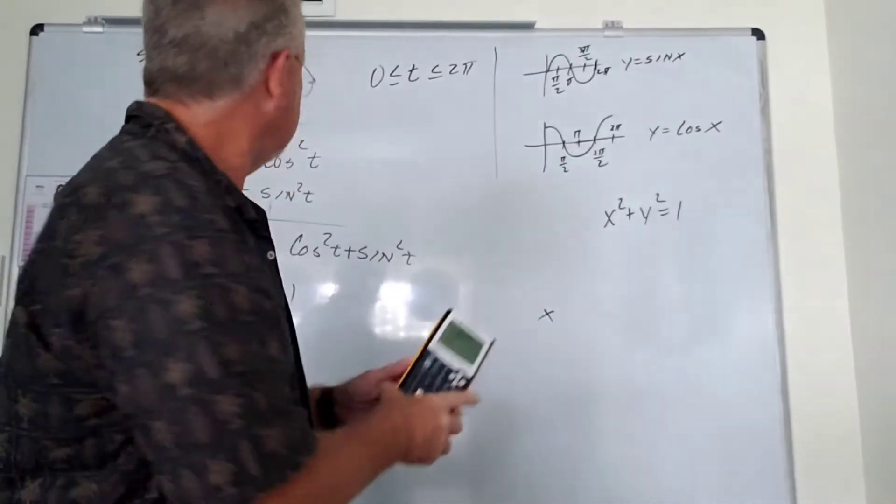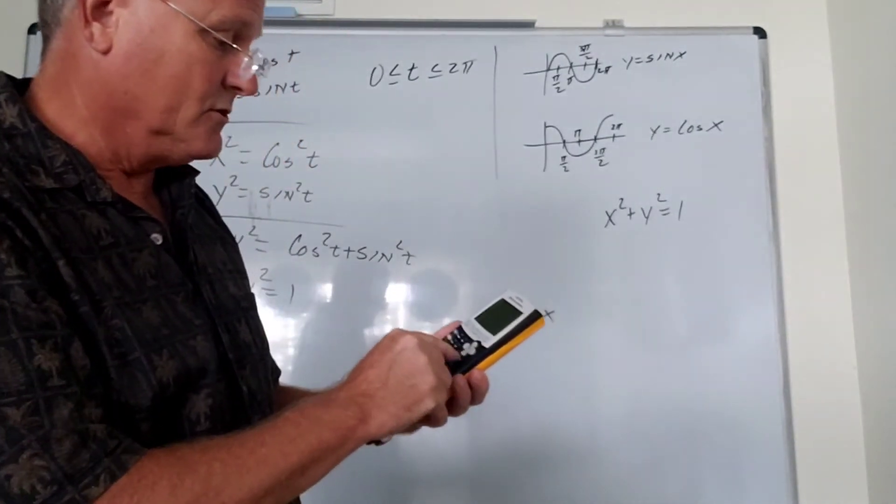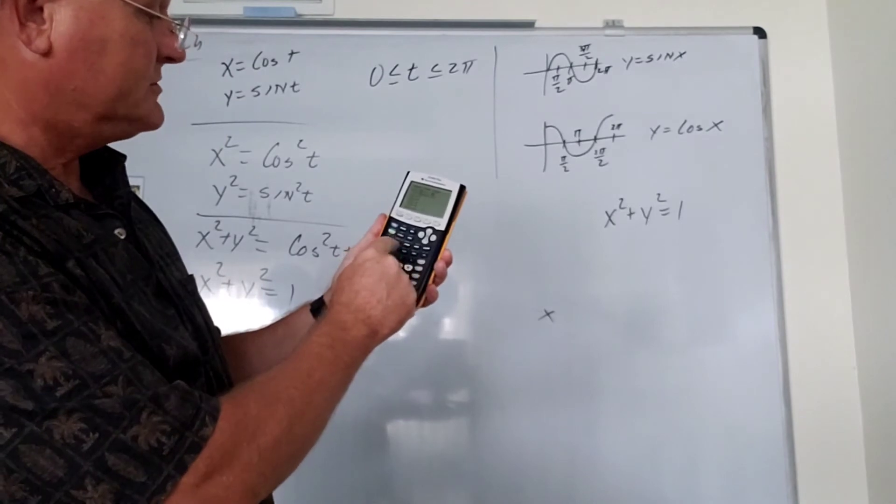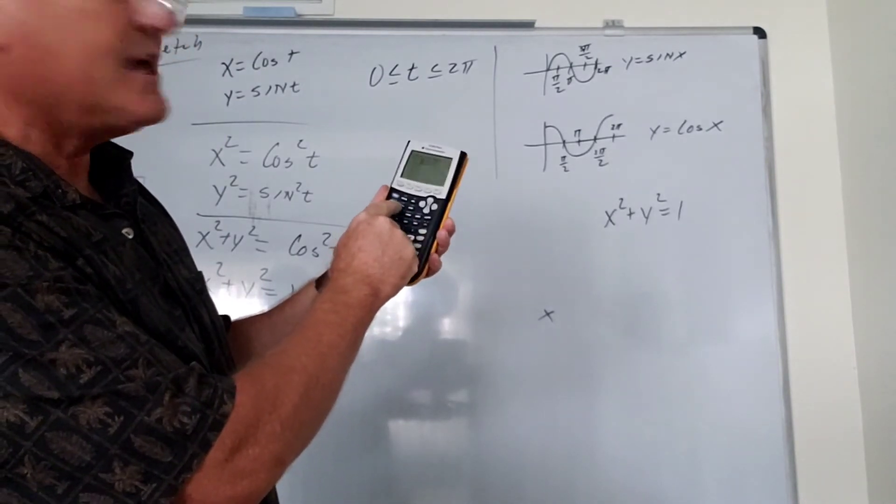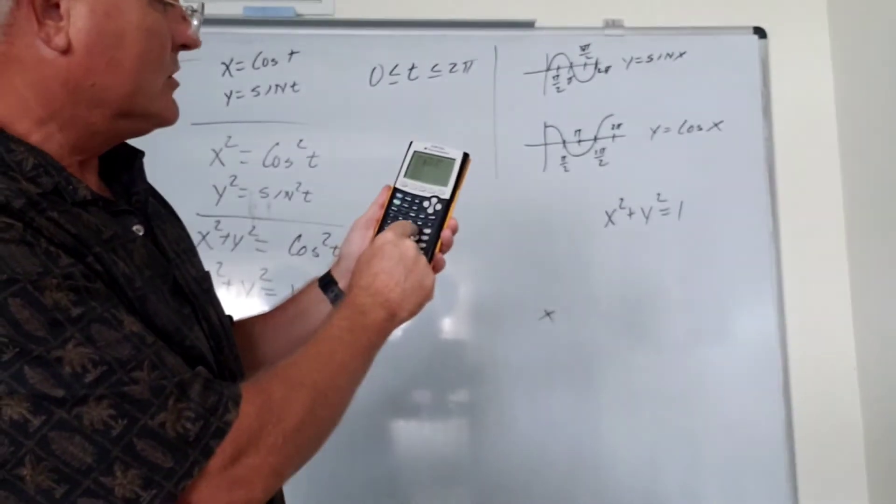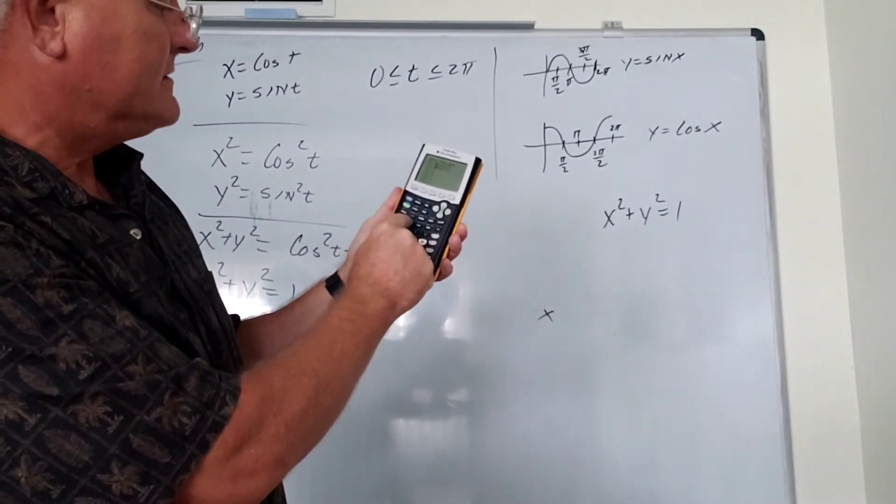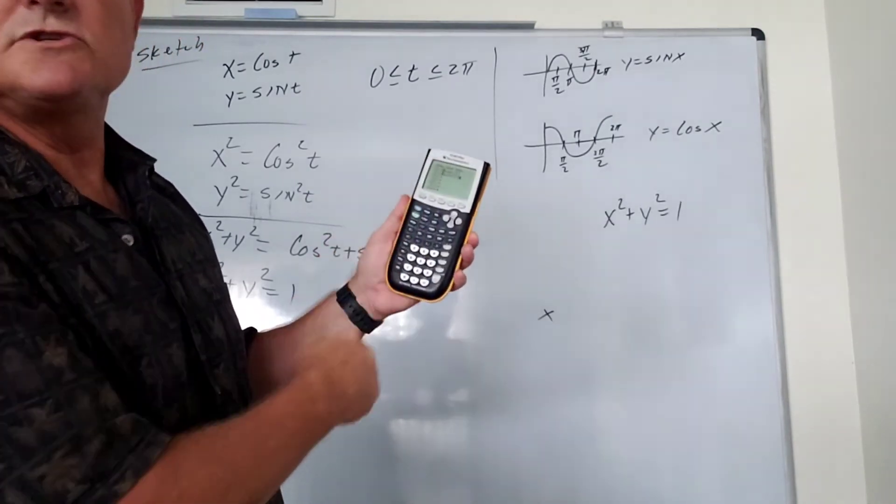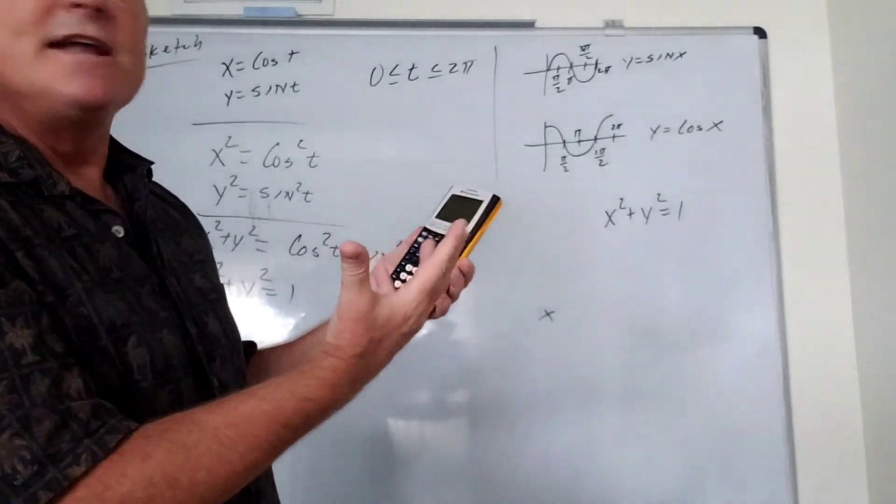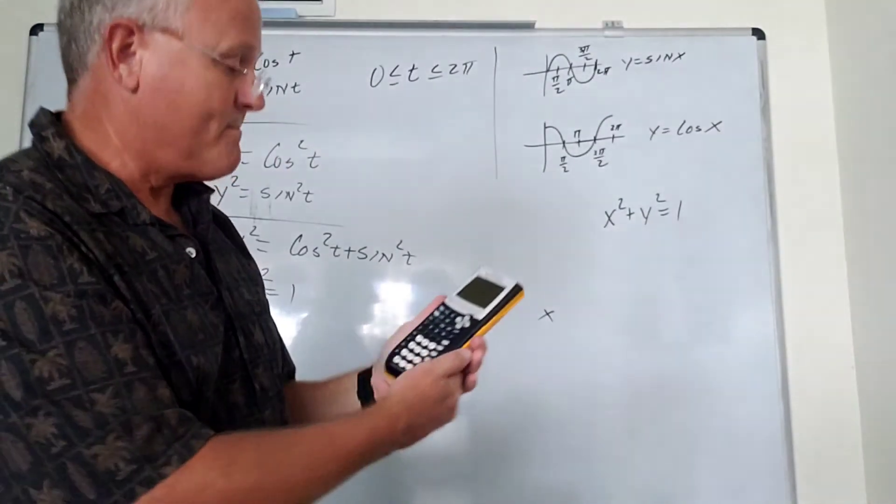And then press y equals. Now for x, type in cosine t. So we just press cosine, press the x, t, theta, n button. Close the parentheses, we get cosine t. Press sine, and again, press the variable key, and we get cosine t and sine t. Now here, we want t to be between 0 and pi over 2.